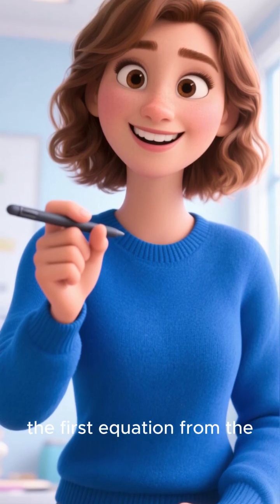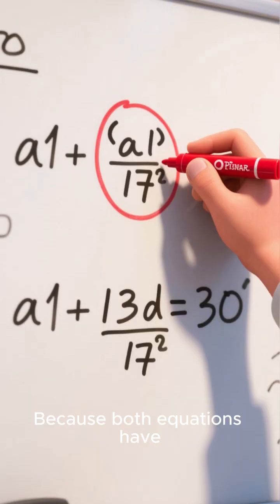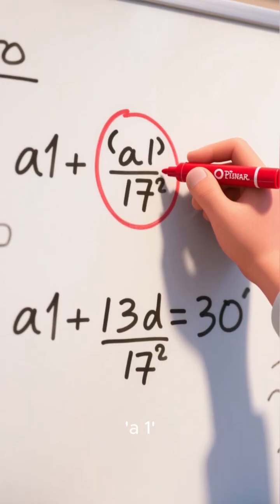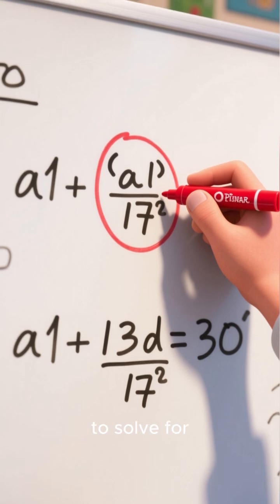The trick here is to subtract the first equation from the second one. Why? Because both equations have a_1, so subtracting them will make it disappear, leaving us with just d to solve for.